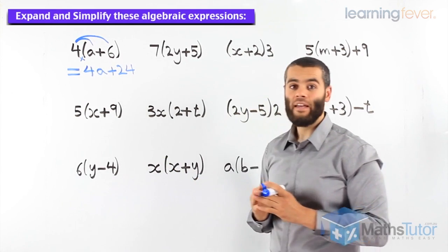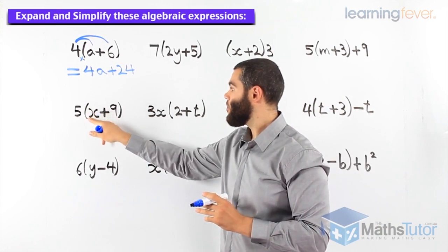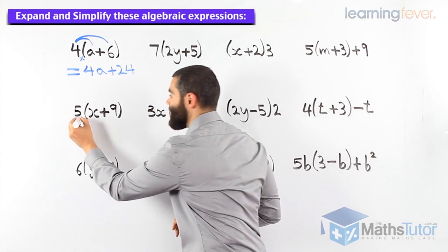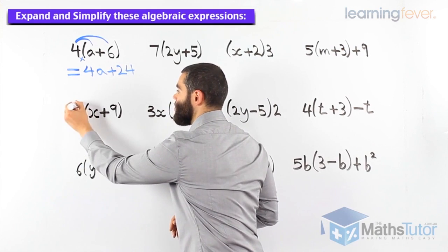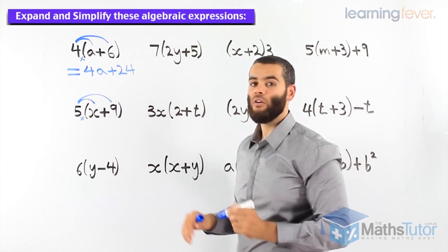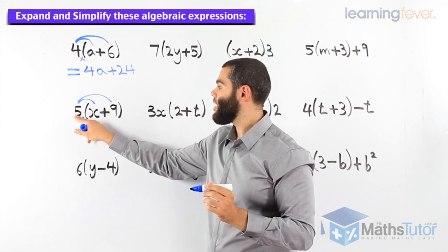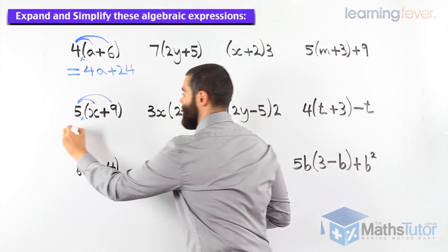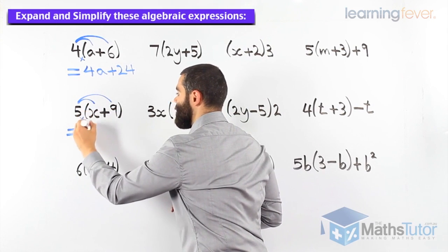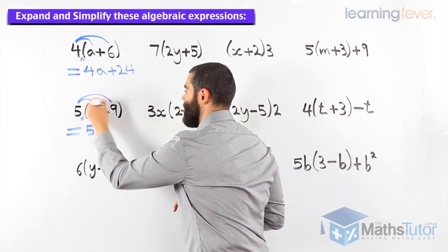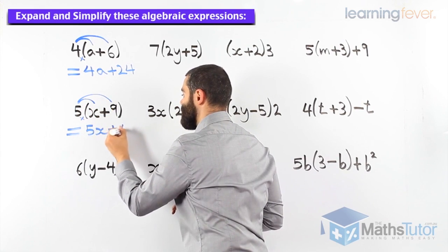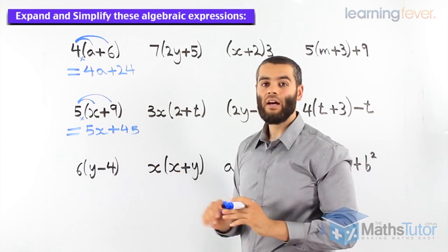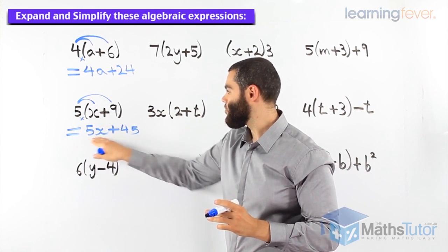Here, again, we're asked to expand. Five, open bracket, x plus nine, close bracket. We know there's a little multiplication here, so we multiply and we show the arrows, meaning we're multiplying five by x and five by nine. Let's do it. Five times x, five x. Five times nine, forty-five. Can we go any further? We can't, because they are not like terms.